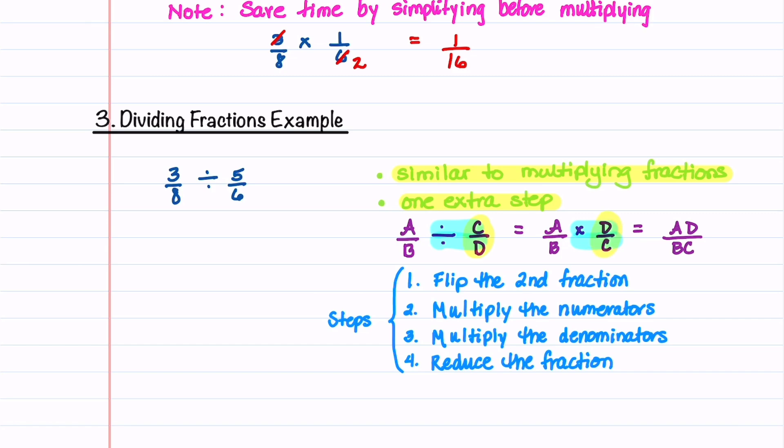We can find the reciprocal by flipping the second fraction. In our example, we have 3 8 divided by 5 6. We'll flip the 5 6 and get 3 8 times 6 over 5. We just flipped the second fraction.